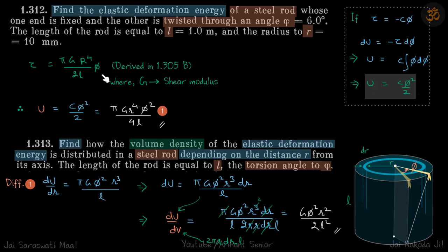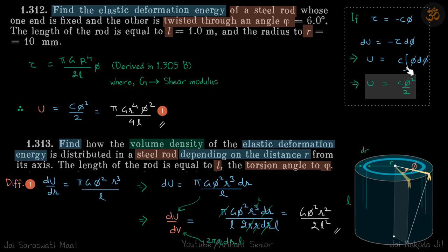If torque is proportional to phi, let's write it in general form. This is the external torque, and because the rod is twisted slowly, the internal torque is minus C·phi. The energy stored is the negative of internal torque times d·phi. Substituting internal torque as minus C·phi and integrating from 0 to phi, the energy stored comes to U = C·phi² / 2.